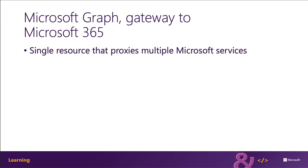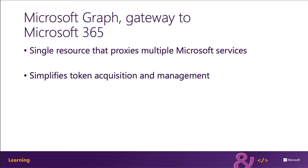Microsoft Graph encompasses things such as Office 365, Windows 10, Enterprise Mobility and Security, and it brings all of these different services under one unified endpoint, graph.microsoft.com. The advantage to using Microsoft Graph is that it allows developers to have just a single endpoint and a single access token to authenticate the different services. Each service still has its own individual permissions so that everything is still secured in an individual way, and a single endpoint makes it easier for developers to build applications.